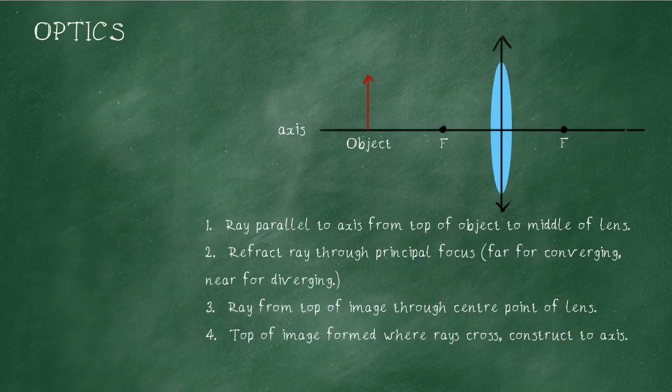Firstly, we draw a ray parallel to the axis from the top of the object to the middle of the lens. That's going to look, with a ruler, something like this. Stop at the middle of the lens with that one.